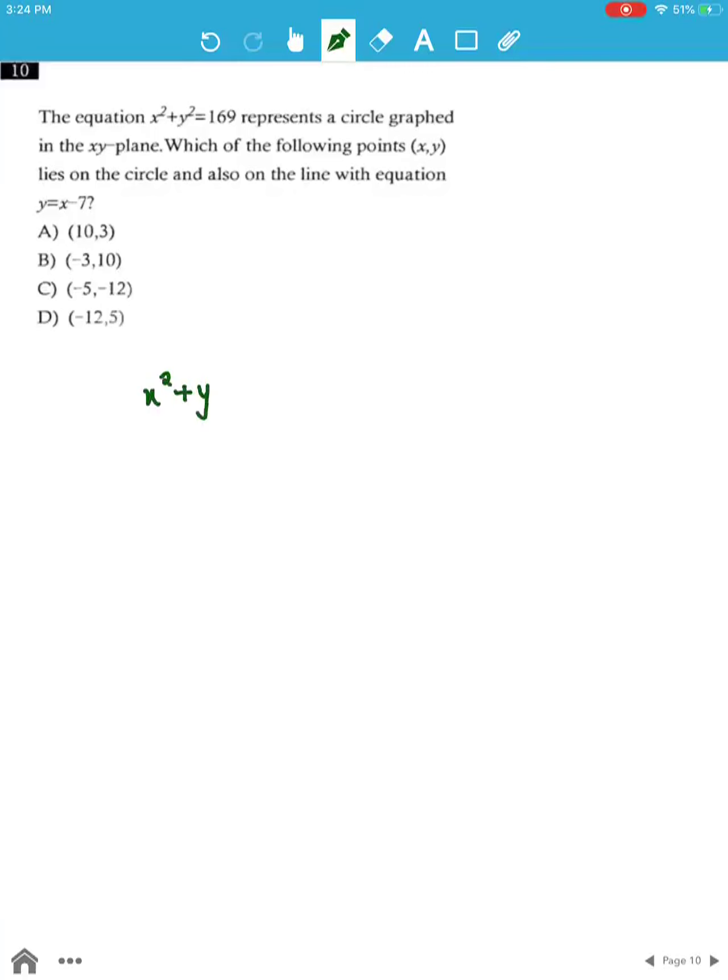x squared plus y squared equals 169. Comparing this to the equation of a circle, (x - h) squared plus (y - k) squared equals r squared.